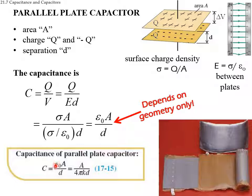Instead of epsilon zero one can use one over 4 pi k. The capacitance depends on geometry — the area and the distance. This tells you how capacitors are manufactured: you have two plates with something in between to keep them apart and not in contact, and then they can be rolled up. There are many such capacitors inside your cell phone, your computer, and your calculator.